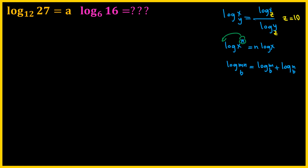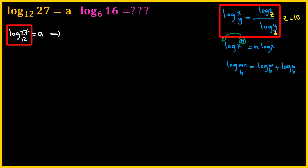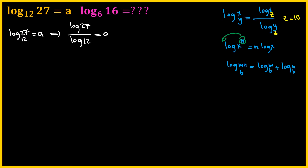Anyway, we're going to use these properties to solve our problem. So first, we are given log 27 with base 12 equals to a, and by using the change of base property, we can say log 27 over log 12 equals to a. And then we can replace 27 with 3 cubed, and we can replace 12 with 2 squared times 3. We basically factor them.